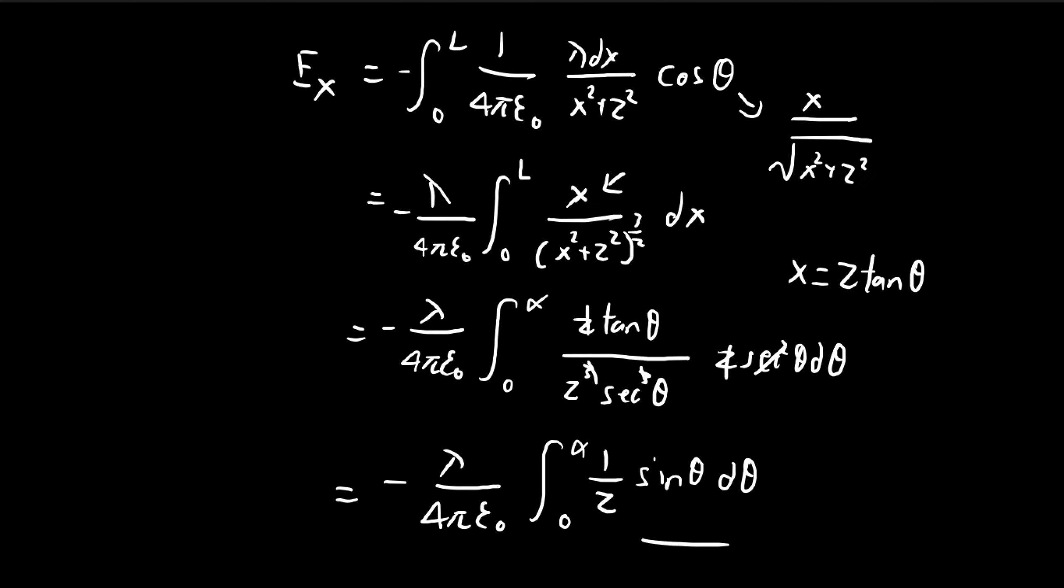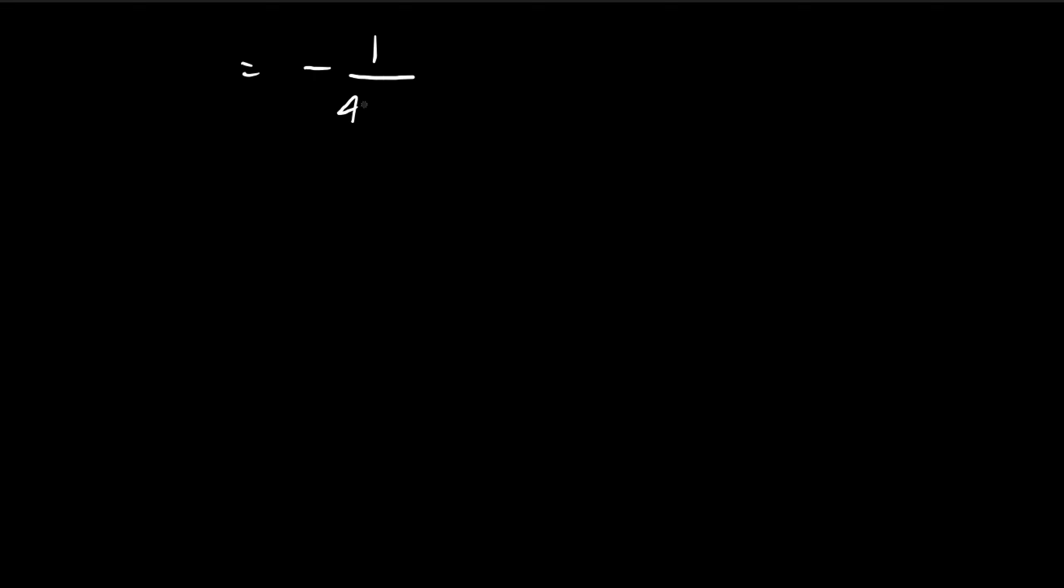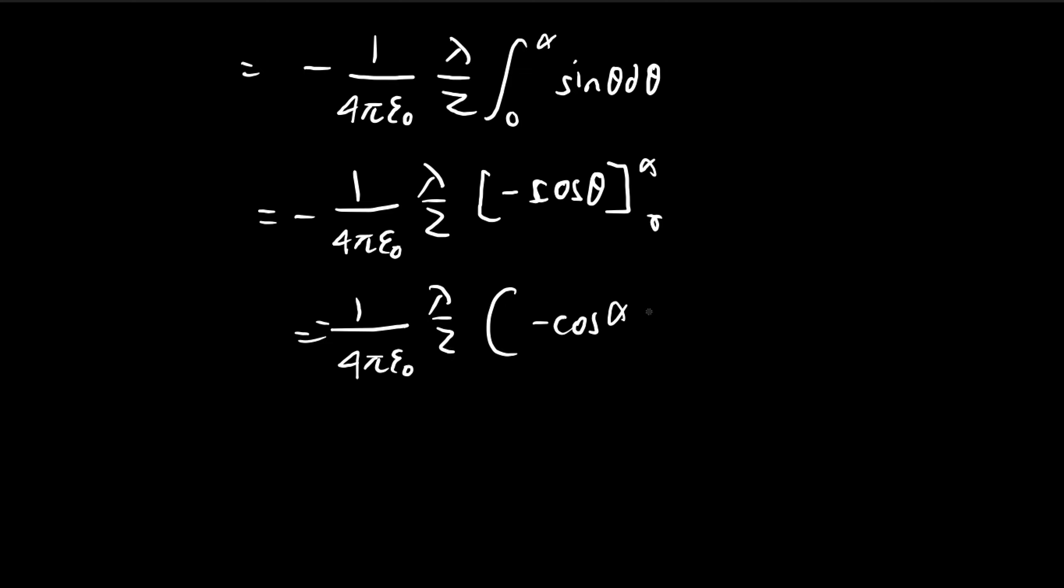So let's just carry on with this. So we have lambda over 4 pi epsilon_0 times lambda divided by z, integral from 0 to alpha of sine theta d theta. So integrating this, integrating sine theta, we get negative cosine of theta, 0 to alpha. So don't forget the negative sign. So we have negative cosine of alpha plus 1, because cosine of 0 is going to be 1.